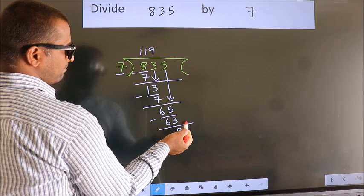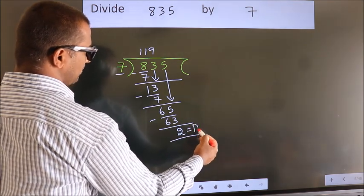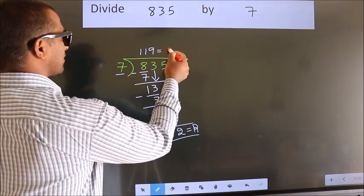No more numbers to bring it down. So, we stop here. This is our remainder. This is our quotient.